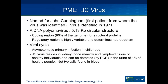Most of us are infected primarily in childhood, and it's asymptomatic. The virus then resides in the kidney, bone marrow, and lymphoid tissue of healthy individuals, and a third of us will shed it in urine if we look by PCR, but it's unusual to find it in blood.